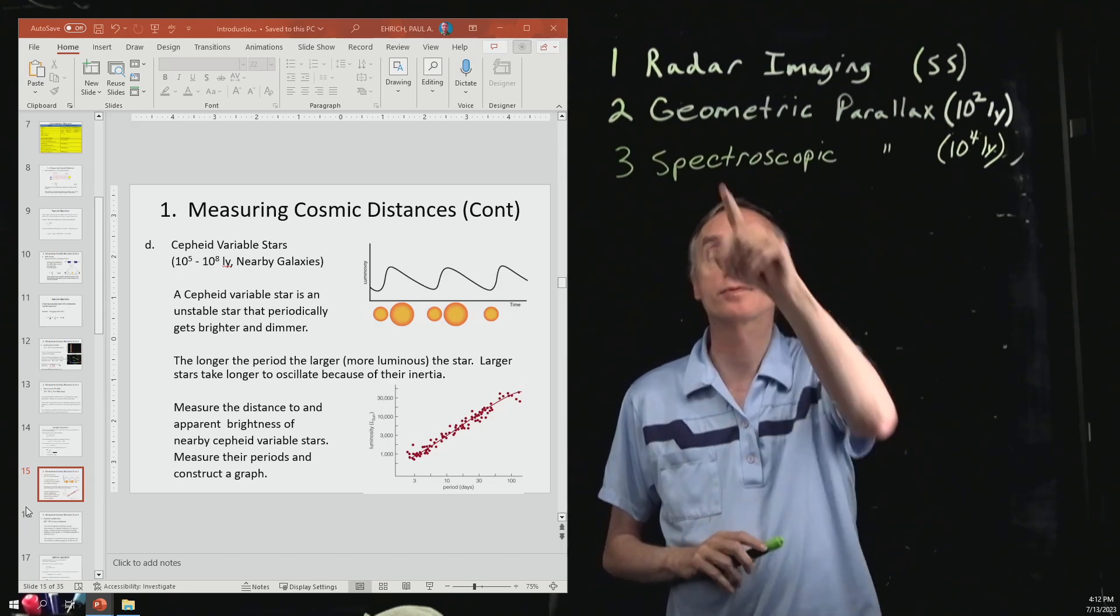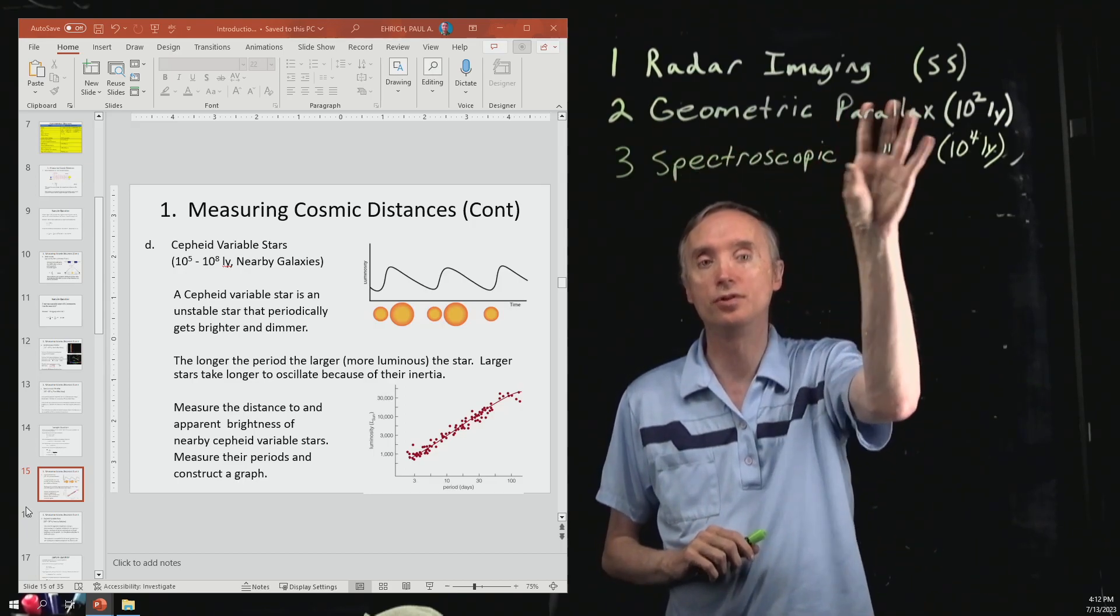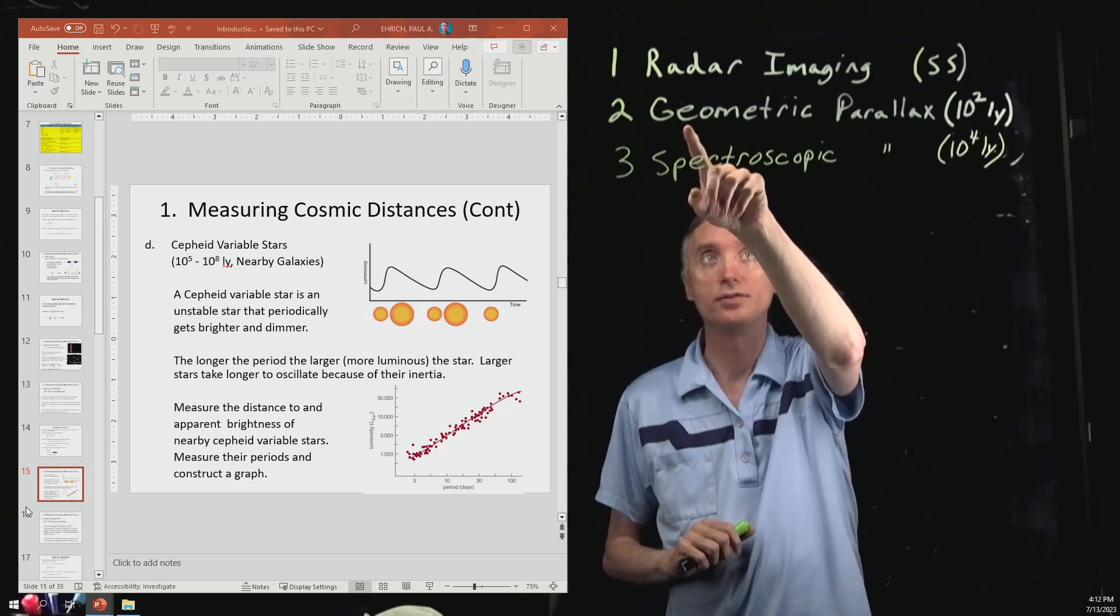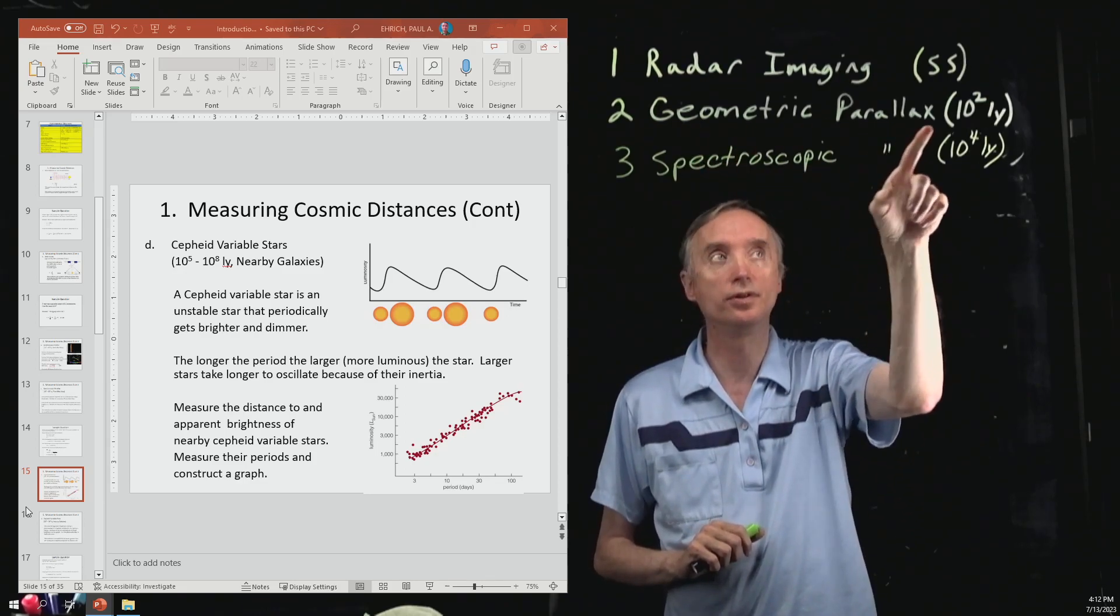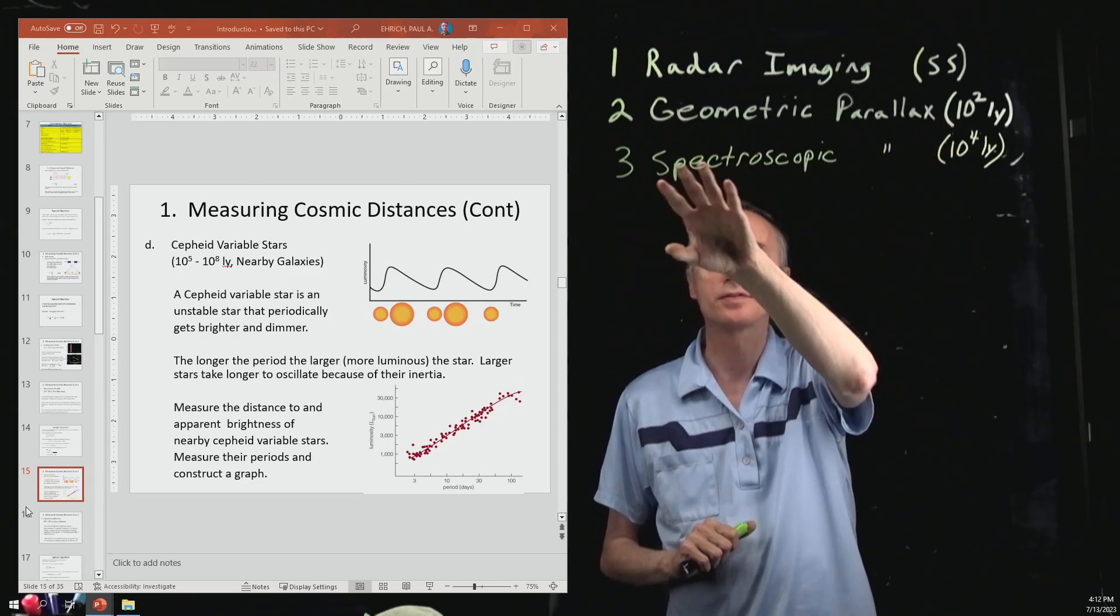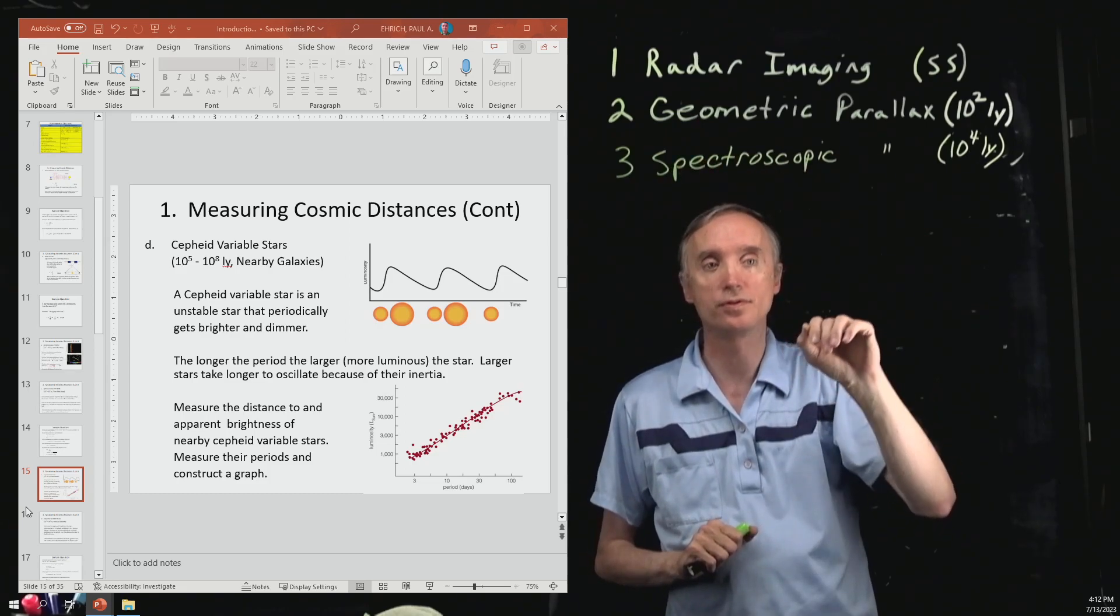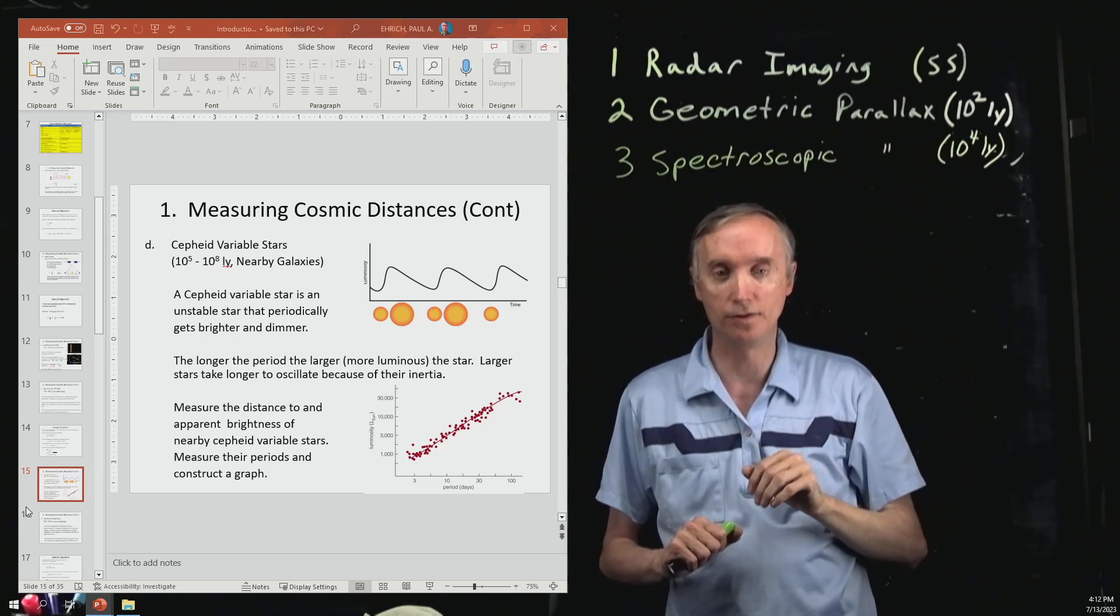Okay, so now we've discussed radar imaging, which is good within the solar system, geometric parallax, which is good up to 100 light years, spectroscopic parallax, which is good up to 10,000 light years.